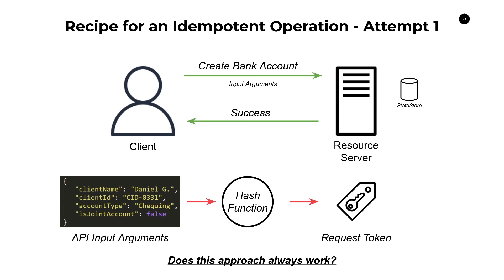It definitely allows us to identify unique properties of the request to help group them together. But what if we actually did want to create two different bank accounts? What if we had a teller communicating with a client at a bank branch, and the client says 'I want to create a checking account.' The teller clicks the button, then the client says 'actually, I want to create two accounts — can you create another one?' They click the button again. You'd get two requests with the exact same properties, but you'd only end up creating one bank account because you're deduping based on input arguments. Since these came in at a very similar point in time, you'd only create one bank account — which is not desirable.